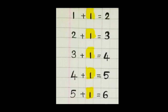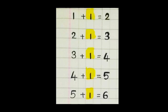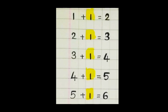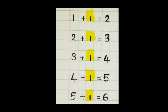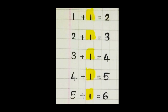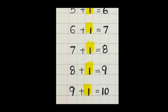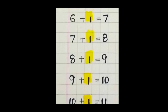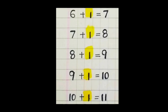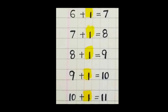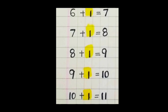Once again. One plus one, two. Two plus one, three. Three plus one, four. Four plus one, five. Five plus one, six. Six plus one, seven. Seven plus one, eight. Eight plus one, nine. Nine plus one, ten. Ten plus one, eleven.